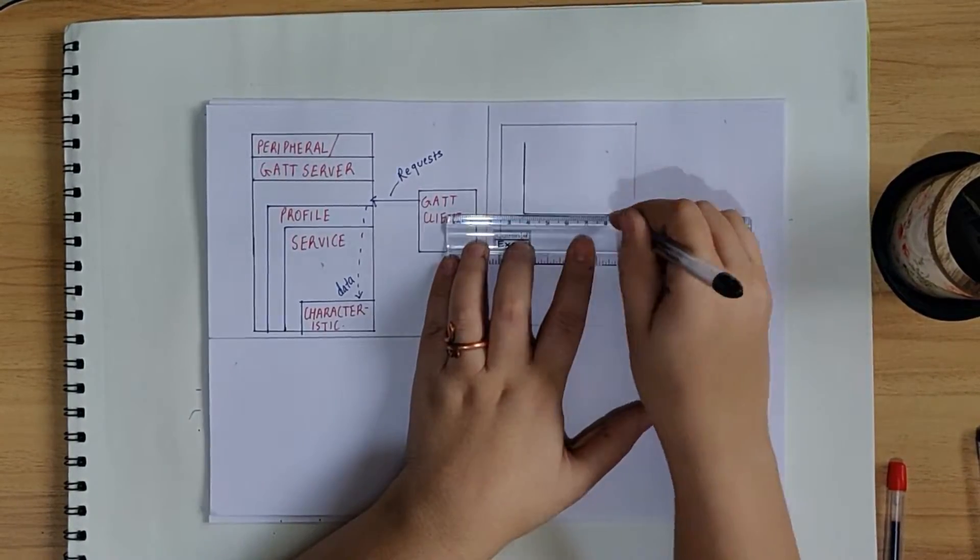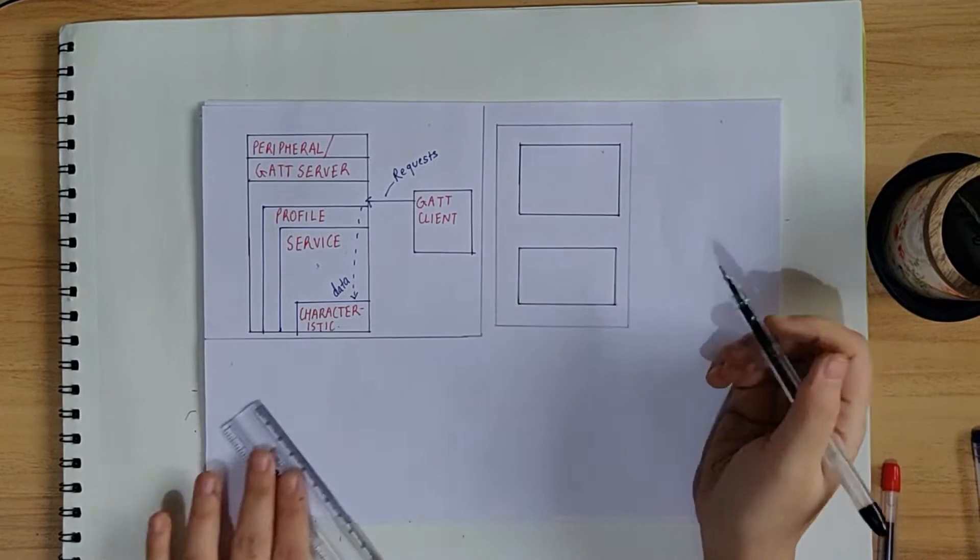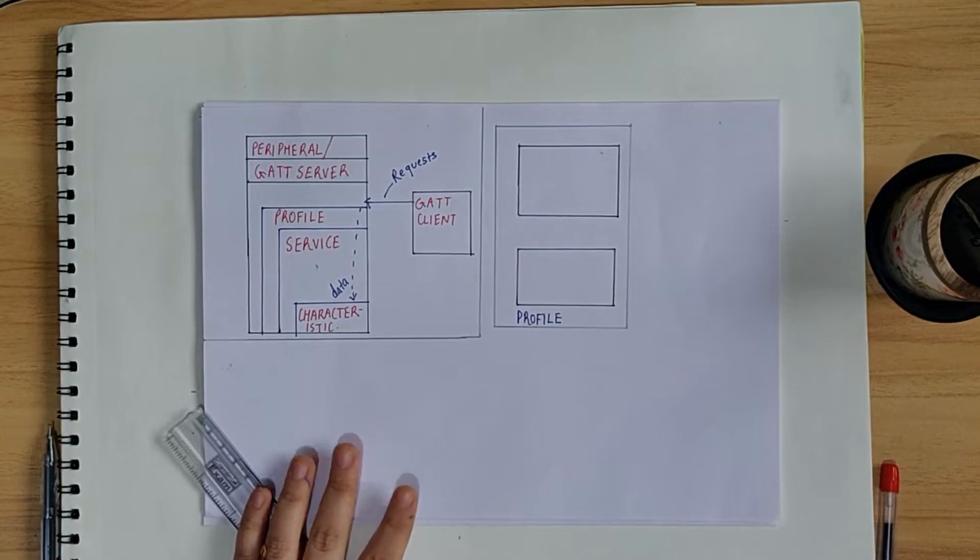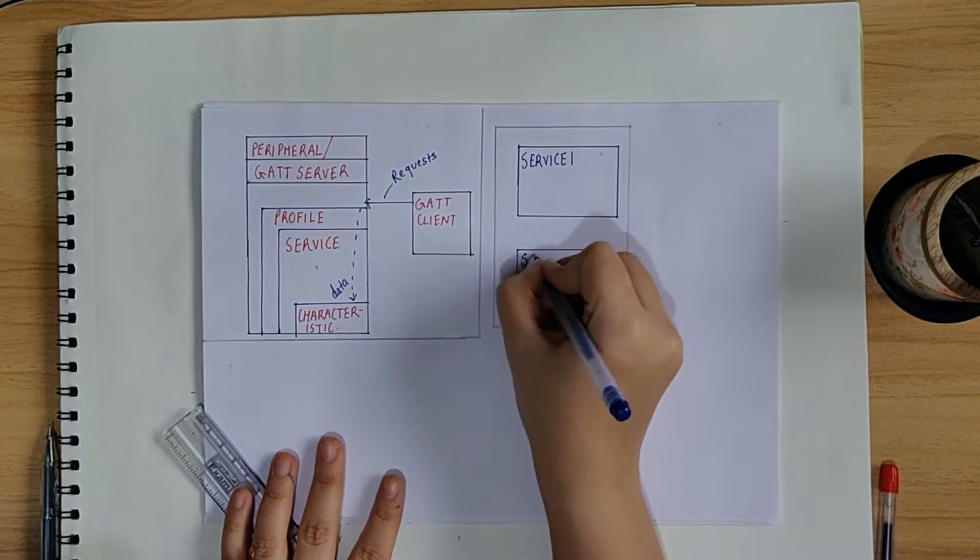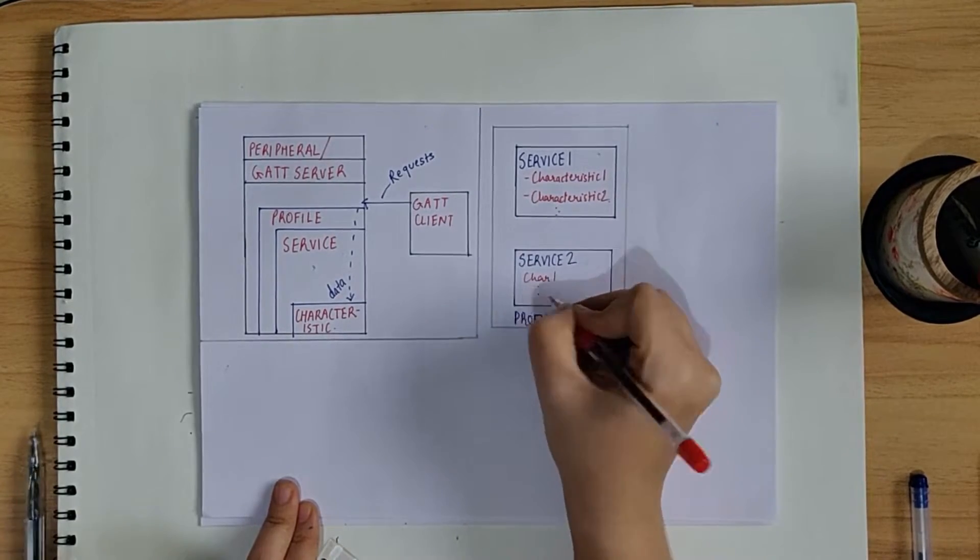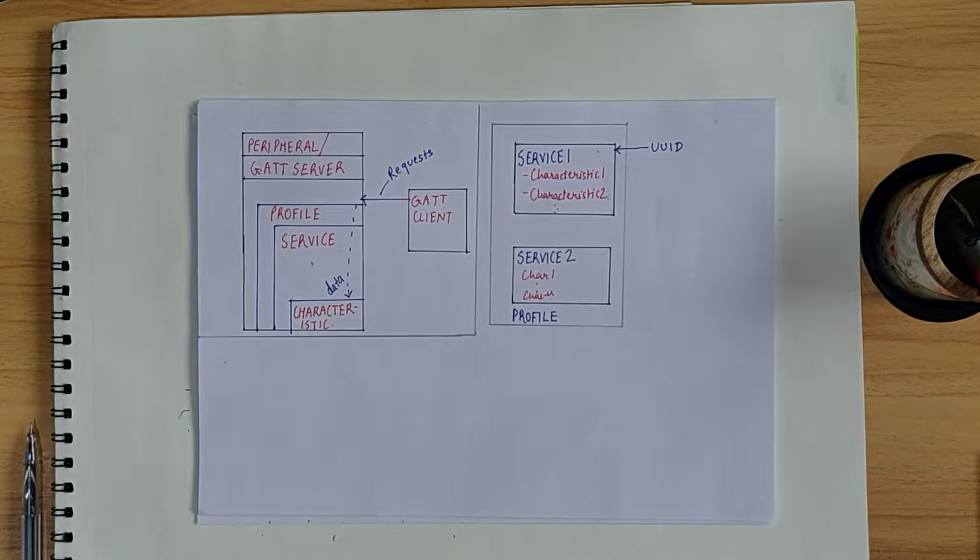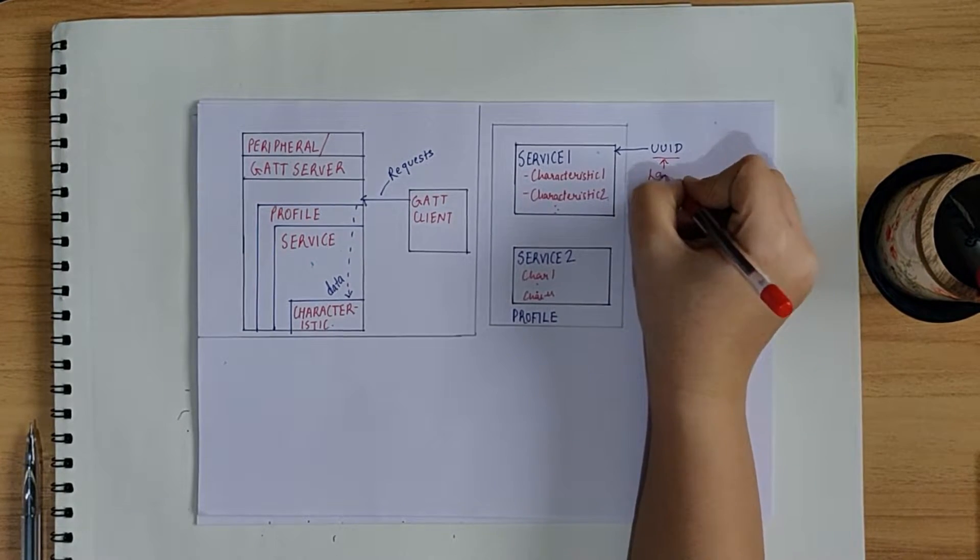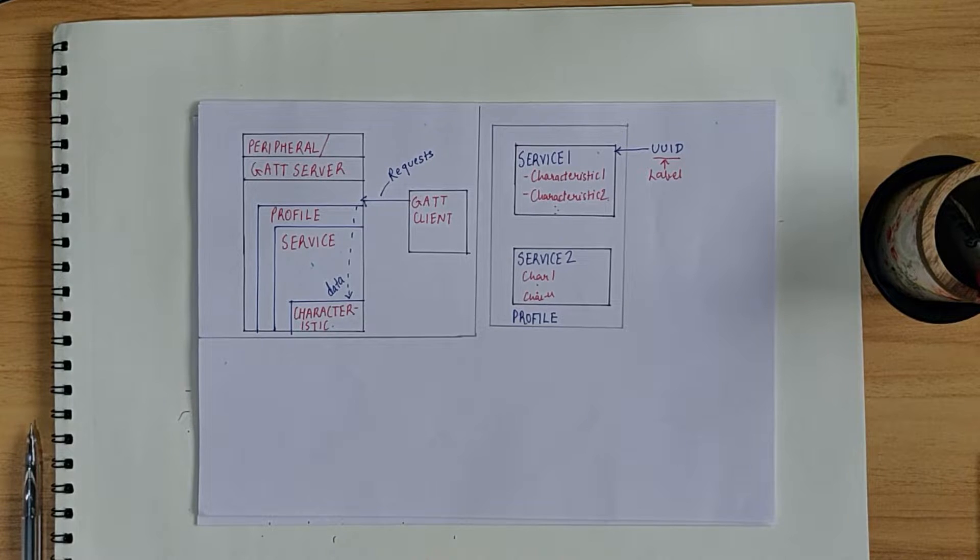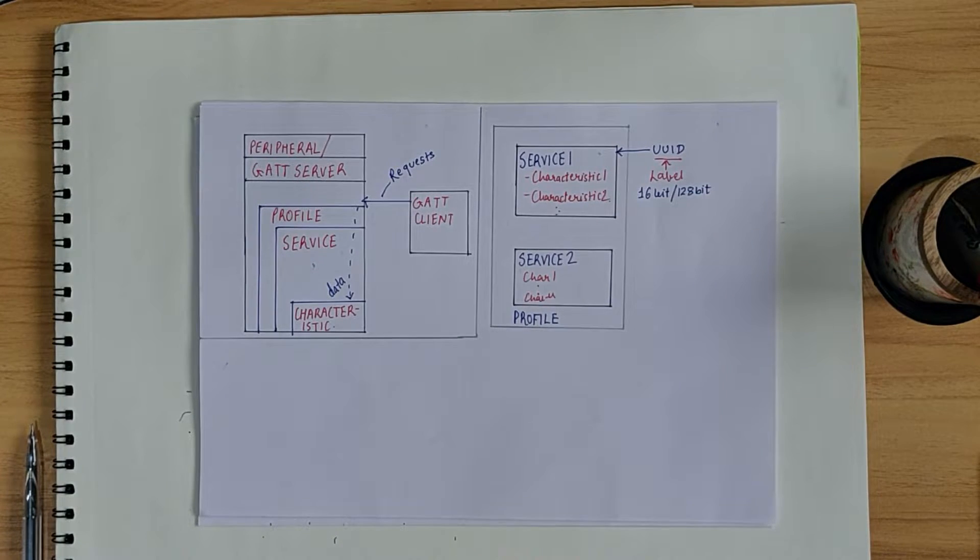So, profile doesn't actually exist on the BLE peripheral itself. It is simply a predefined collection of services which allows us to fulfill a particular goal. Service is a collection of chunks of data called characteristics. Each service has something called as UUID or Universally Unique Identifier, which distinguishes itself from other services. So, UUID is basically like this unique label which allows you to access a particular service. The UUID can be 16-bit for an officially adopted BLE service or 128-bits long for custom services.